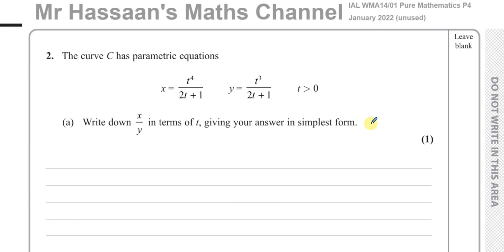This is by the way the unused January 2022 Pure Mathematics P4 paper, and this is about parametric equations. So x over y, we have to just divide these two fractions. If we divide two fractions, you take the first fraction and you write it as it is, and you multiply by the reciprocal of the second fraction. So there's going to be 2t plus one over t cubed. You can see the 2t plus ones cancel out. You're left with t to the power four over t cubed, which is t.